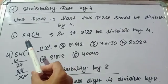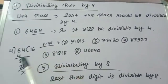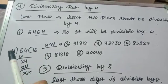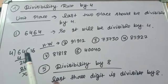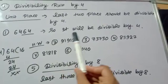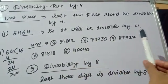Here we have 64, so we need to check whether 64 is divisible by 4 or not. We can see 64 is completely divisible by 4, so it will be divisible by 4.